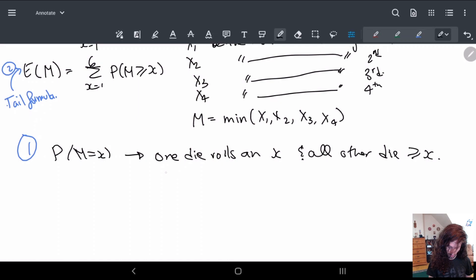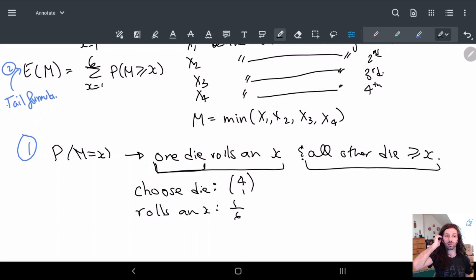So first, one die rolls an x. So what's the chance of choosing the die? So the one die part, choose die, this is given by 4 choose 1. Rolls an x, this probability is just 1 sixth, right? So we have 1 sixth chance of rolling this x. And then we want the probability that all other dice roll greater than or equal to this x. So what's the chance that each one of these rolls greater than or equal to x?